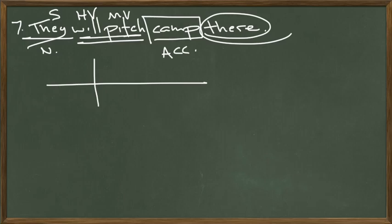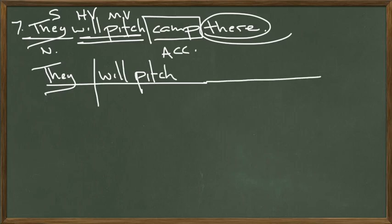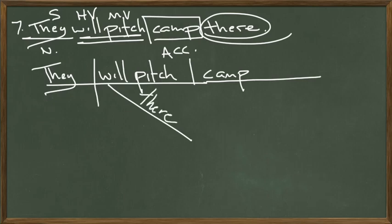To diagram it, we'll start with a main line and divide it. We'll put the subject on the subject side — they — what will they do? They will pitch. There's our main sentence: subject and verb. What will they pitch? We have a direct object in the accusative case, so it goes on the main line with a half stick: they will pitch camp. And where are they going to pitch camp? That goes underneath the verb because it answers the question where — it's an adverbial question. They will pitch camp there.